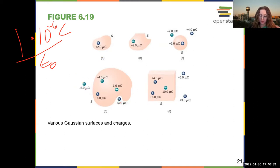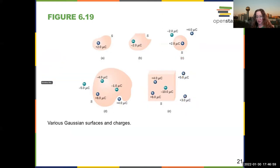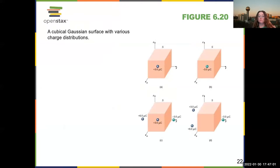The next one. These guys, they don't matter. They don't matter. They don't matter. So the total enclosed charge is 4 plus 6 minus 10. It is 0. The total flux in that case is 0.